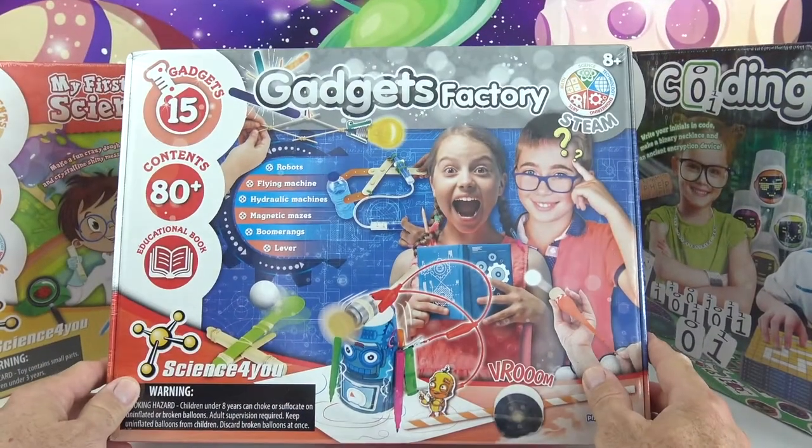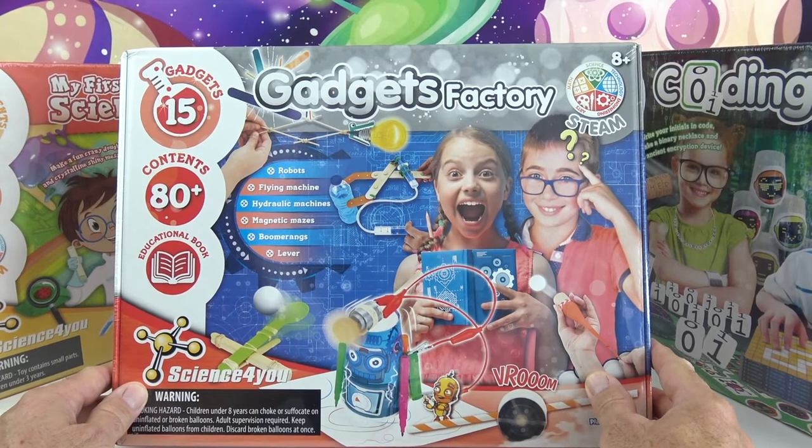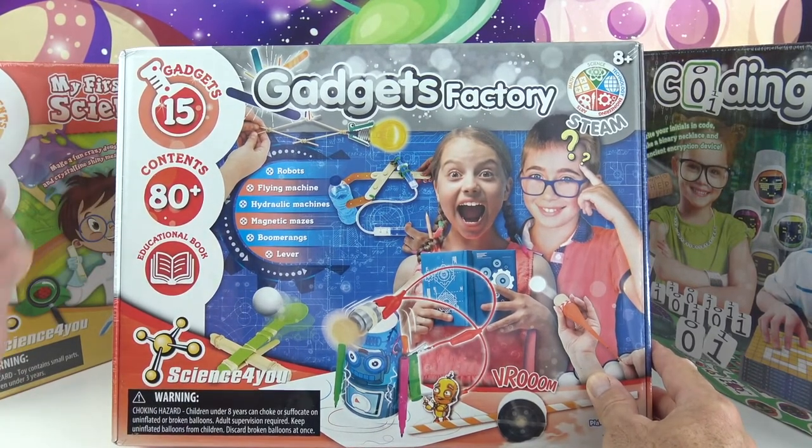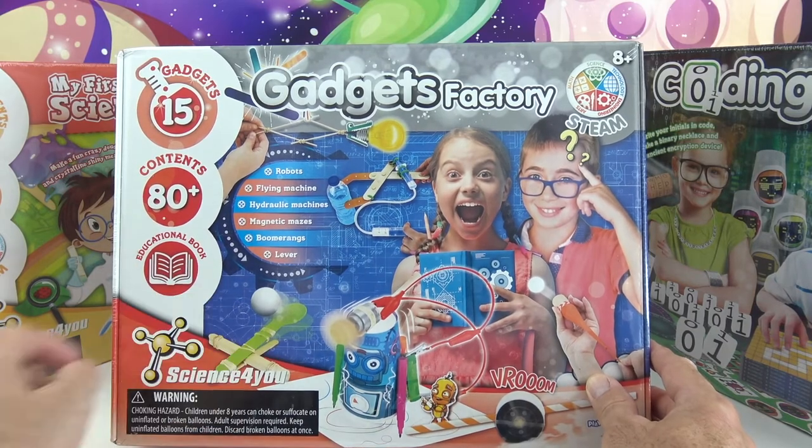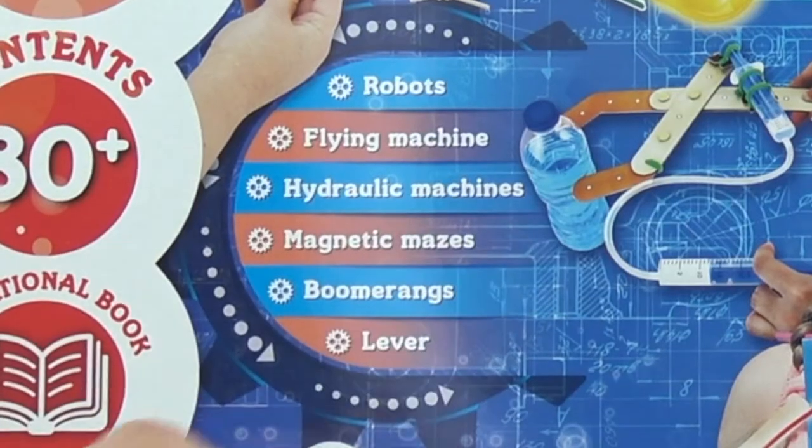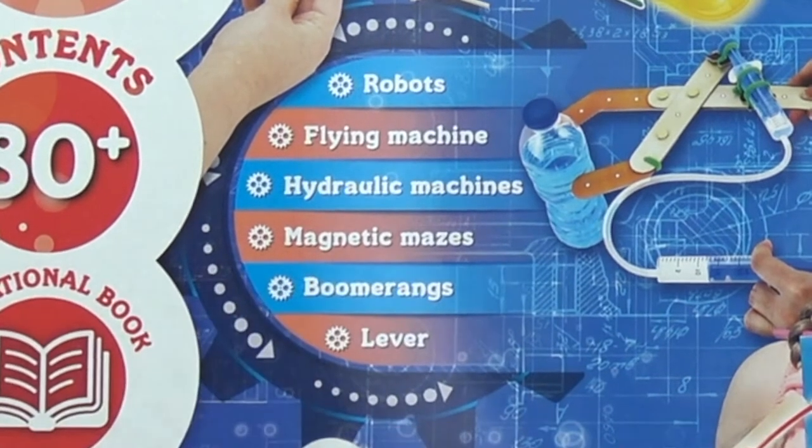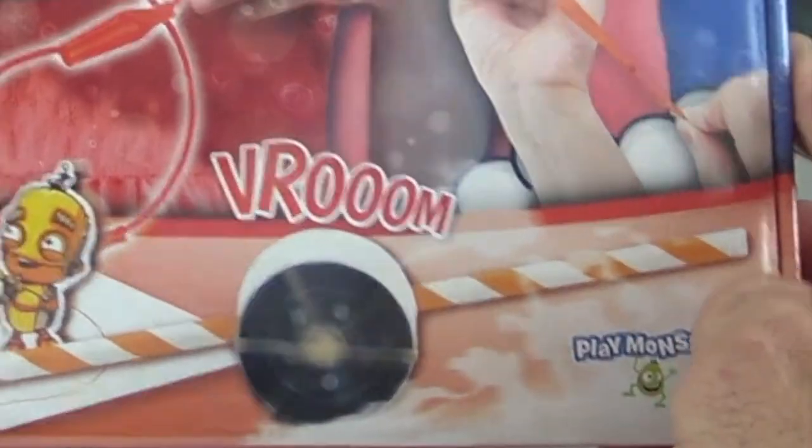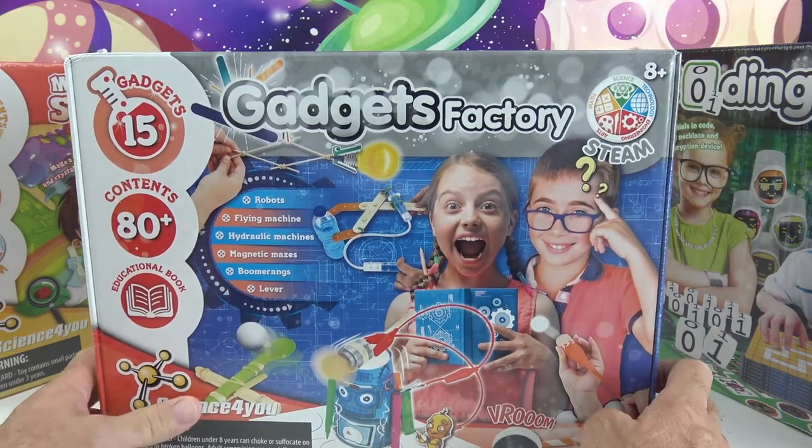So we're going to choose to do one or two experiments. I think we should check out this gadget factory. What do you think guys? This one looks pretty cool. Yeah. So this one includes 15 with 80 contents and an educational book where you can build robots, flying machines, hydraulic machines, magnetic mazes, boomerangs, and a lever. Alright. Let's open it up and start our experiments.